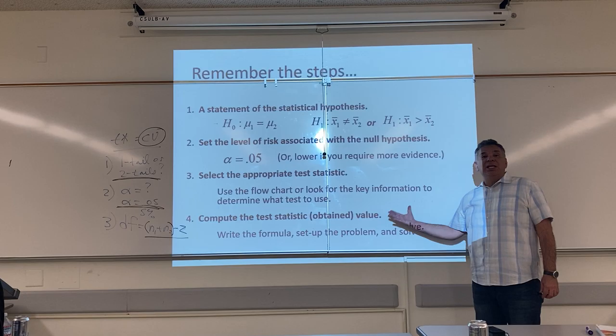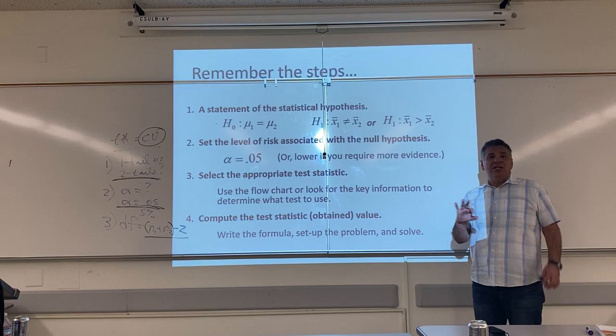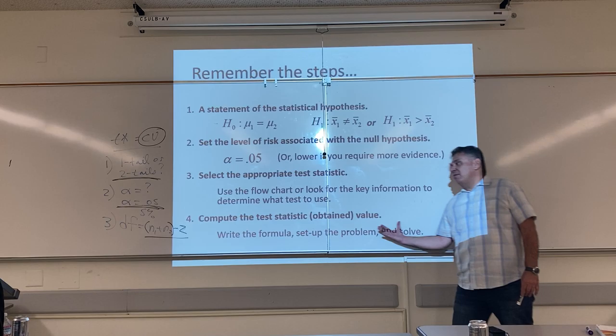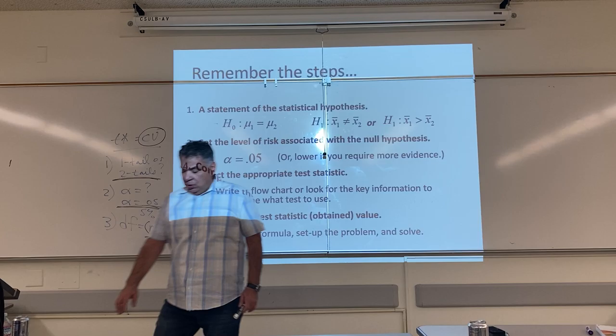Step three: select the appropriate test statistic. Right now you can use the flowchart, but what you really want to do is remember the key information for using the right test. What's the right information that tells you to use an independent sample t-test? You're looking for a difference, you have two groups, and everybody's only being tested once.